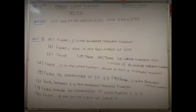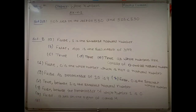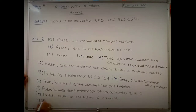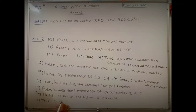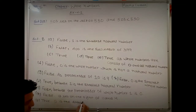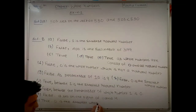Part l says: the whole number 0 has no predecessor. This is absolutely true, because 0 is the smallest whole number, so there is no whole number before it.